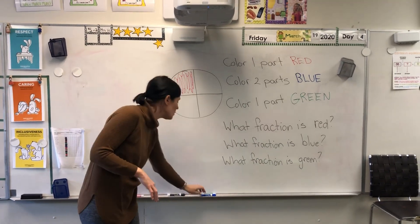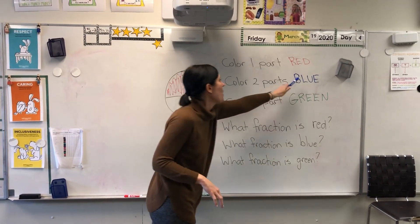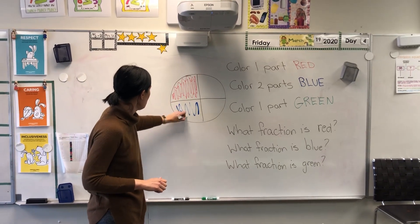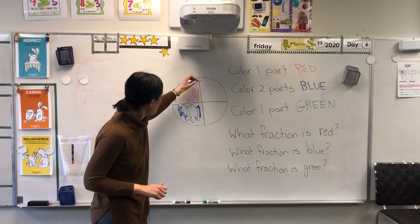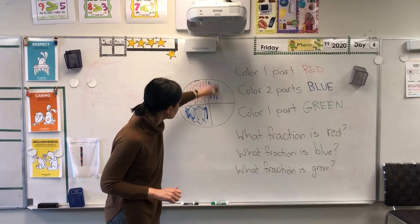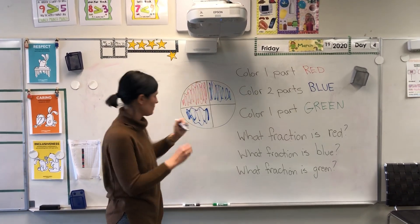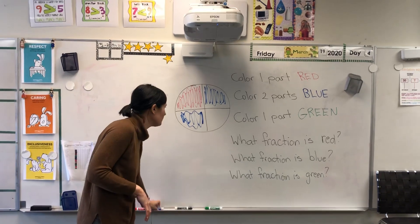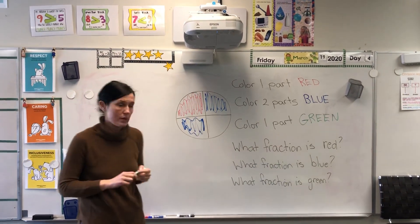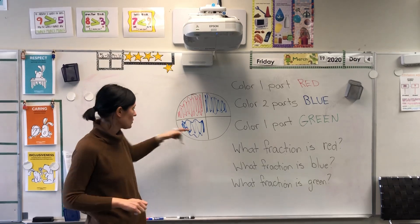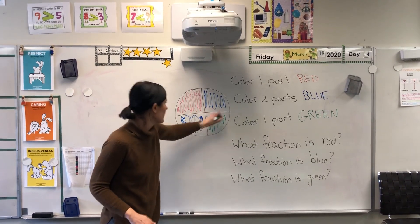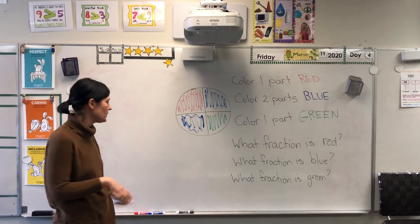Okay, color one part red — I'm going to go ahead and color this part red. Now color two parts blue. This part is blue, and I can choose whichever part I want — it doesn't matter. This part is blue. Two parts are blue. Now last, we're going to color one part green. We only have one part left, so I'm going to color it green. Now we have a nice colorful circle.